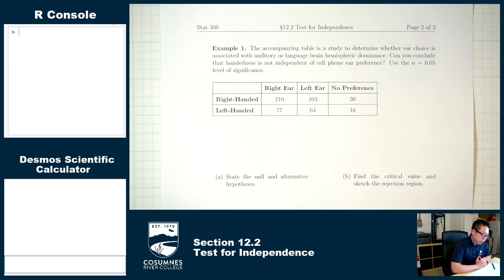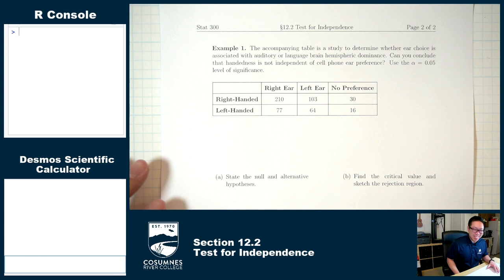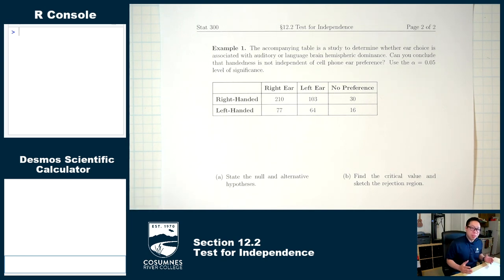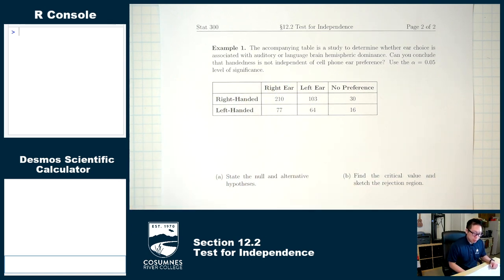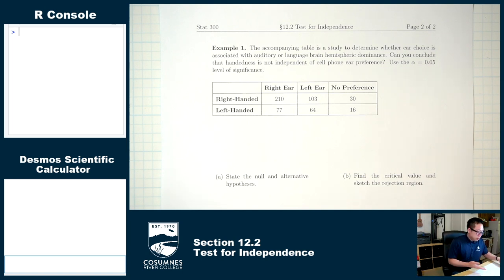Example one: the accompanying table is from a study to determine whether ear choice was associated with auditory or language brain hemispheric dominance — really just saying which side of your brain is more dominant, i.e., are you right-handed or left-handed. The question is: can you conclude that handedness is not independent of cell phone ear preference? In other words, if you're right-handed, do you prefer to put your phone to your right ear, left ear, or have no preference? This original table is our observed counts.